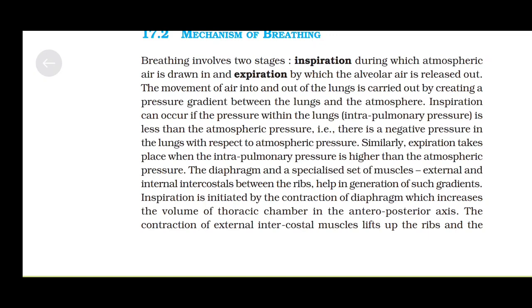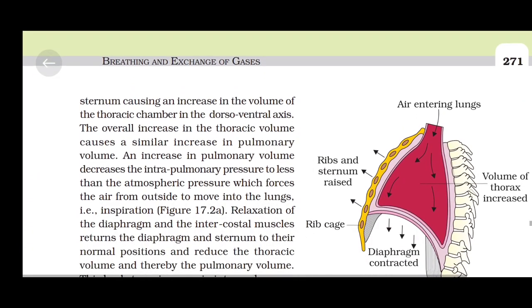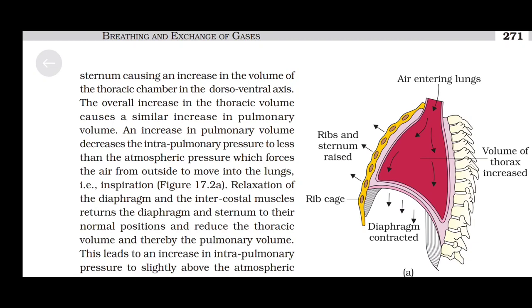Inspiration is initiated by the contraction of the diaphragm, which increases the volume of the thoracic chamber in the anteroposterior axis. The contraction of external intercostal muscles lifts up the ribs and the sternum, causing an increase in the volume of the thoracic chamber in the dorsoventral axis. The overall increase in thoracic volume causes a similar increase in pulmonary volume, which decreases intrapulmonary pressure to less than atmospheric pressure, forcing air from outside to move into the lungs — that is, inspiration.